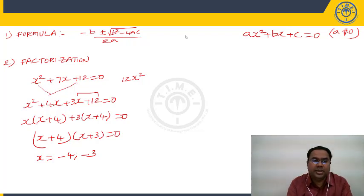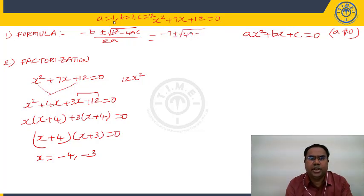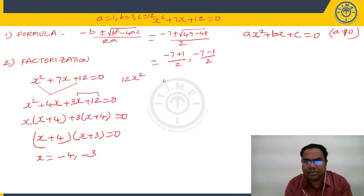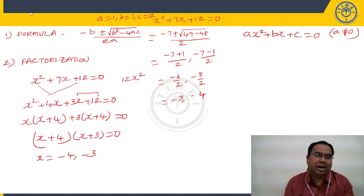Using the formula method on the same equation X² + 7X + 12 = 0: A=1, B=7, C=12. Substituting: X = (−7 ± √(49 − 48)) / 2 = (−7 ± 1) / 2. So X = (−7+1)/2 = −3 and X = (−7−1)/2 = −4. Roots are −3, −4. The formula method is quite time-consuming, so we will not use it.